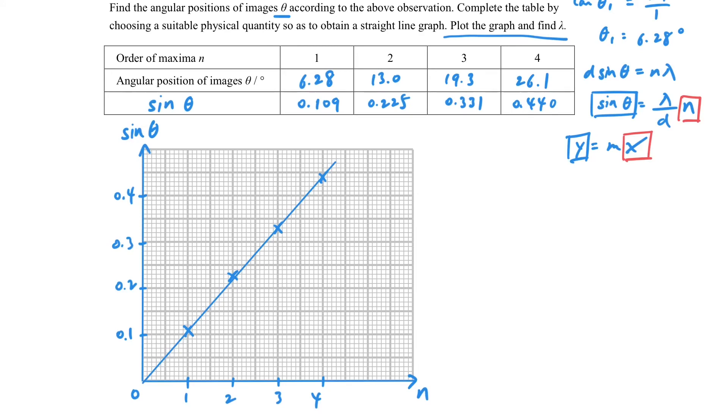Every time we have this kind of question, we have to think: what kind of variables do we have, and what kind of graph is related to the information that we are looking for? We can use the slope. We can choose two points—my points may be different from yours but it's okay. Using y2 minus y1 over x2 minus x1, we can find out the slope is 0.11. We know that the slope is actually λ/d in our case, because we are using the d sin θ = nλ equation, and the d is given in the question.